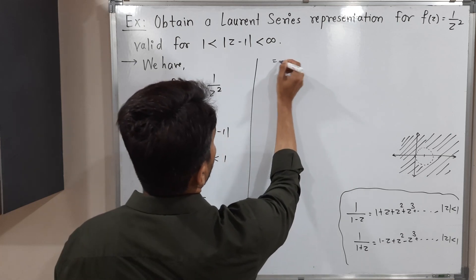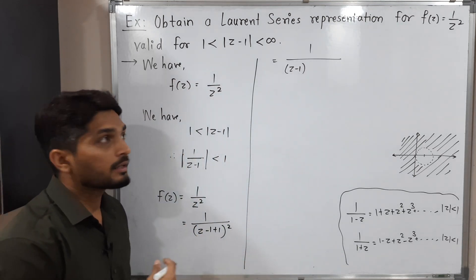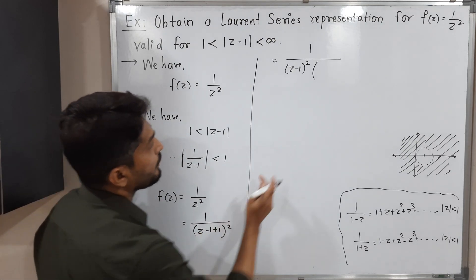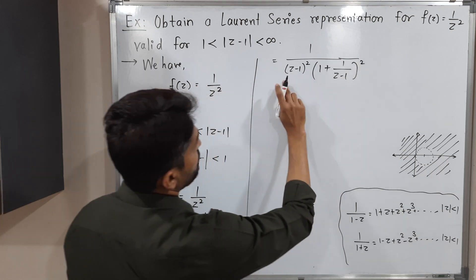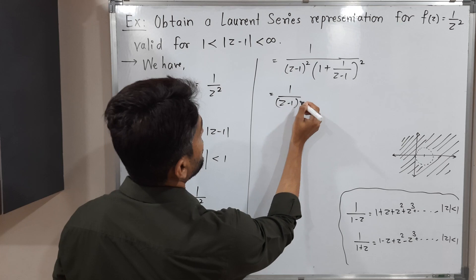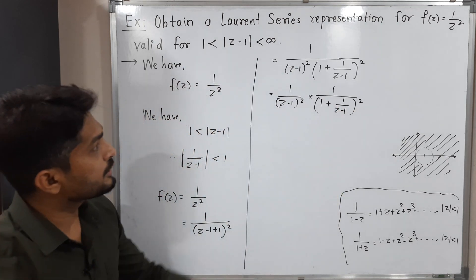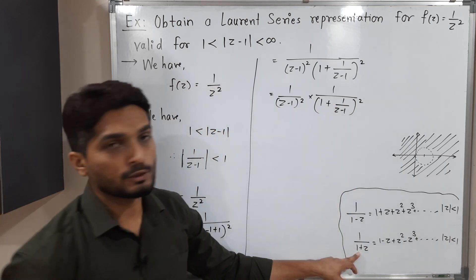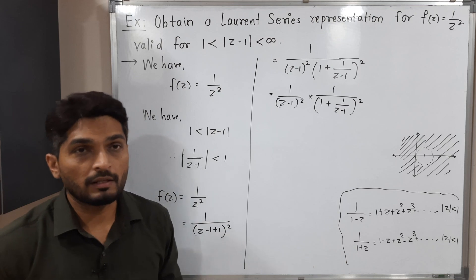Taking (z - 1) common from the denominator: f(z) = 1/(z-1)² · 1/(1 + 1/(z-1))². The (z-1) is taken outside with its square, and only 1 remains inside. We then need to expand 1/(1 + 1/(z-1))². The question is: can we use the series 1/(1+z)? Here we have 1+something with a square, and the standard series has no square, so that series alone is not suitable.